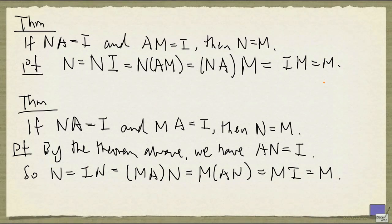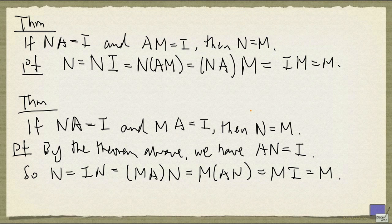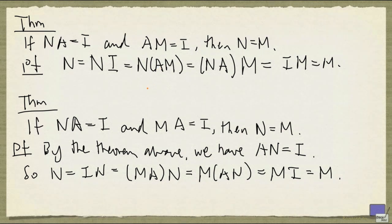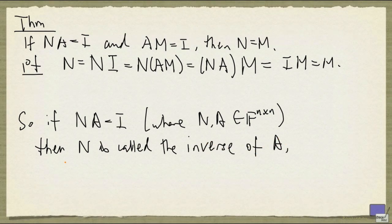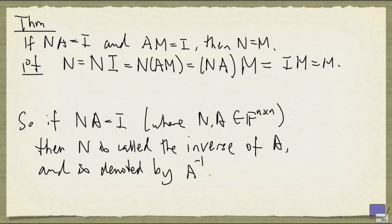So, whether you're looking at the left inverse, right inverse, these two results tell you that you are talking about the same matrix. As a result, we can say that such a matrix is the inverse of A. So if N times A is equal to I, the identity matrix, then N is called the inverse of A. N is denoted by A superscript minus 1.